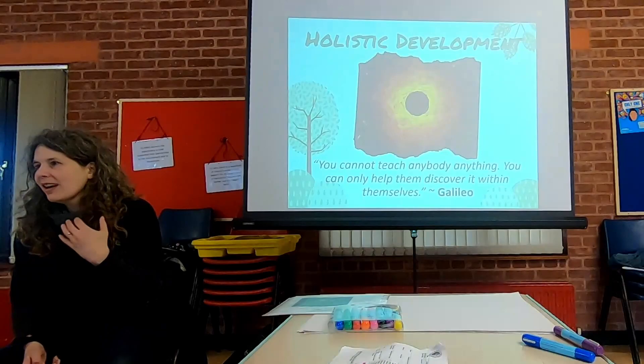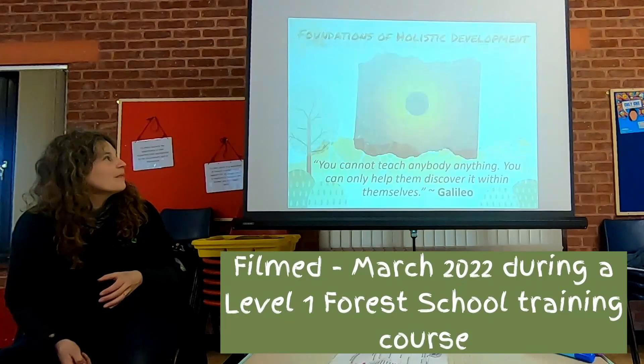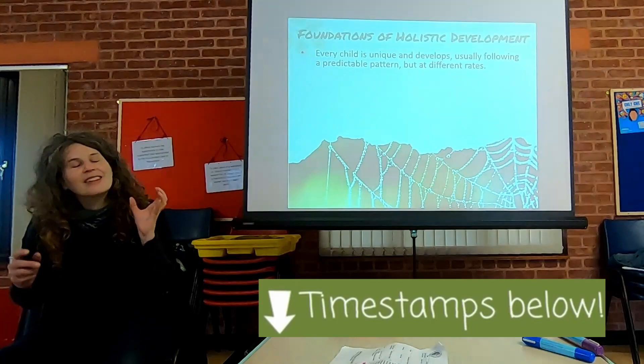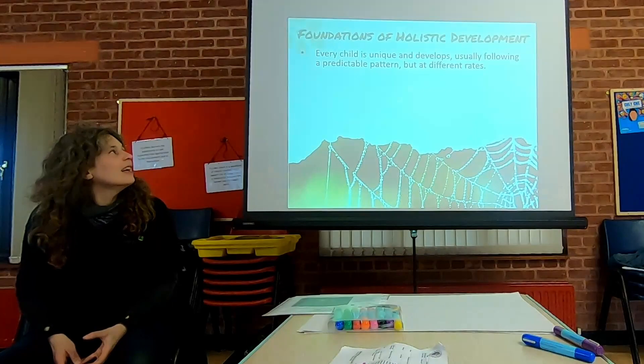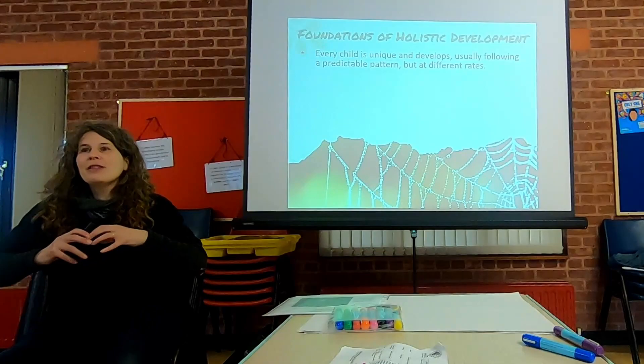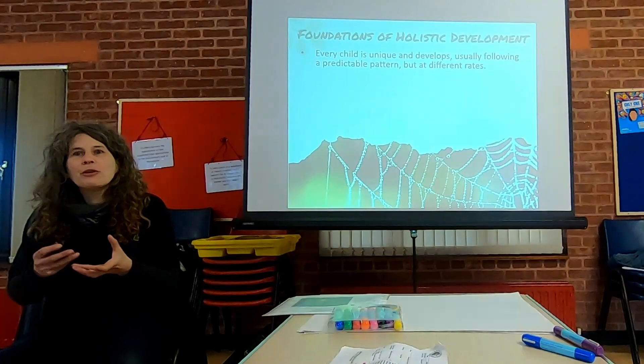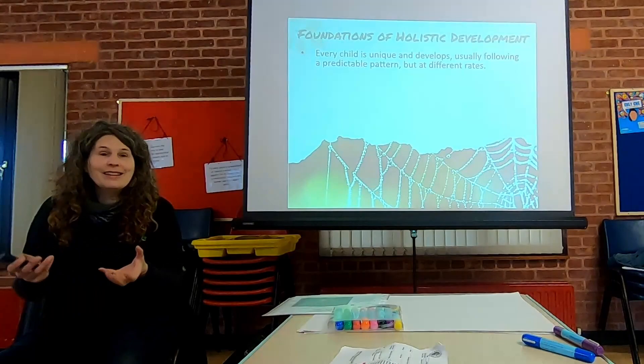We've already started touching on some aspects of holistic development, so this is going to try and pull it all together. Some core fundamental parts: under this theory of holistic development, it's about recognizing that every body is a unique individual, that we have different aspects of our self and our development. It follows a predictable pattern but happens in its own unique way.